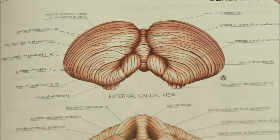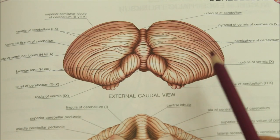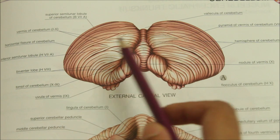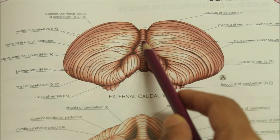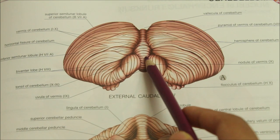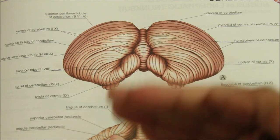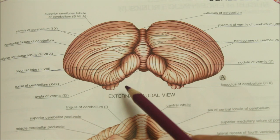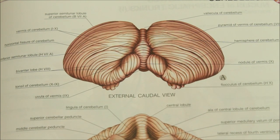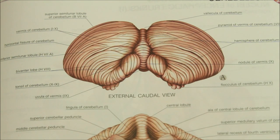Now let us move on to the external features of the cerebellum. This is an external caudal view. The cerebellum consists of two cerebellar hemispheres united to each other by a median vermis. It has two surfaces — the superior surface and an inferior surface. The inferior surface shows a deep median notch called the vallecula, which separates the right and left convex hemispheres.